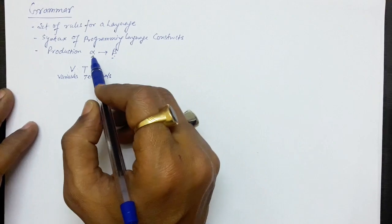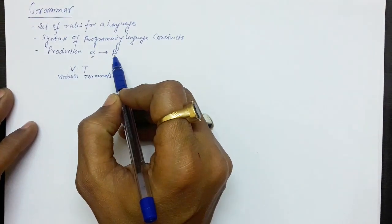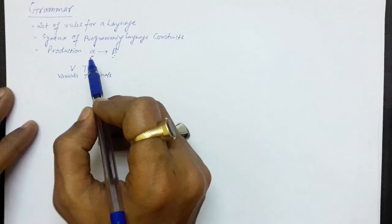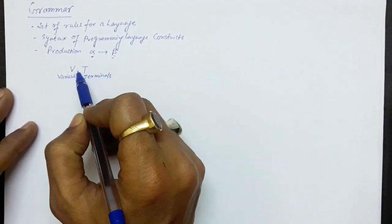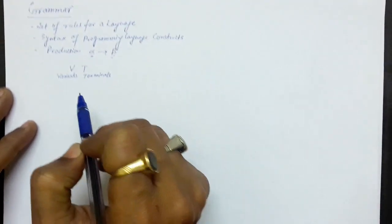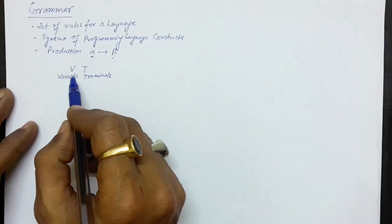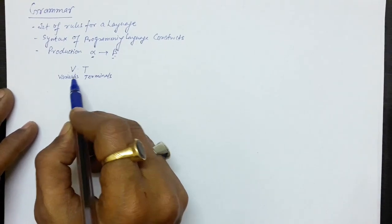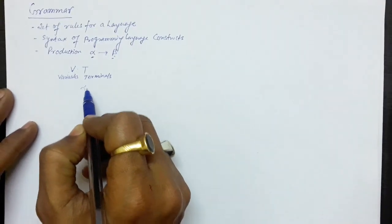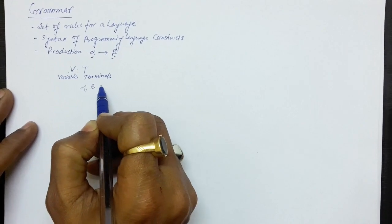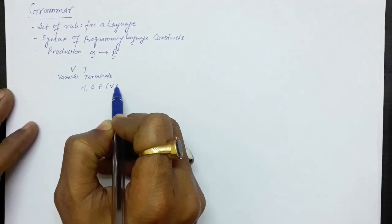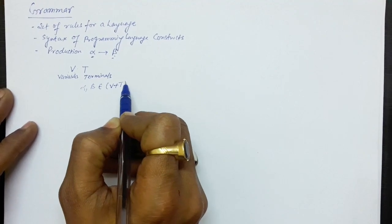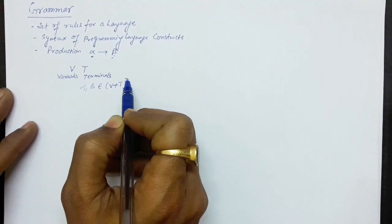These productions are of type alpha produces beta, where alpha and beta are collections of variables (V) and terminals (T). Variables are also known as non-terminals. Alpha and beta are elements from the set of variables and terminals, and any combination of these.